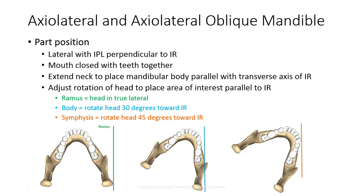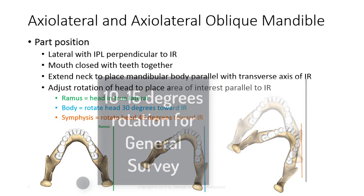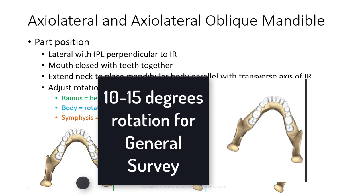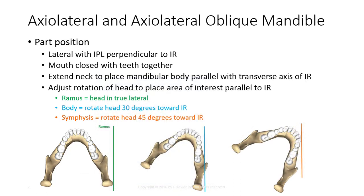Positioning variation will depend on the area of interest. Adjust rotation of the head to place the area of interest parallel to the IR. To visualize the ramus, keep the head in the true lateral position, shown here in green. To better visualize the body, rotate the patient's head 30 degrees towards the IR, as shown here in blue. For the symphysis, rotate the head 45 degrees towards the IR, as shown here in orange. These variations place the part of interest closest to the image receptor and correspond with each section's approximate angle from the MSP.